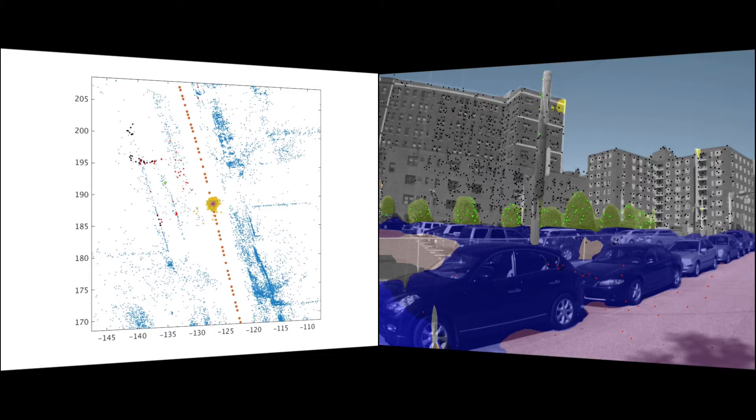Each particle is then rated by how well it explains our observations. So how well a projection of our map, using that particle's pose, matches with our semantically segmented images. The particle that matches the best will then get a high score, and the particles where the projected map and the semantic segmentation matches poorly, will get a low score.